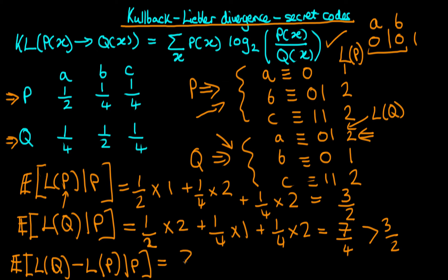Now we can work out the expected difference in letter length between a language encoded using q's crib sheet minus one optimised for p, given that we are transmitting in language p. We just get the difference: 7/4 minus 3/2, which equals 1/4. This tells us that if we transmit a message using a code language optimised for q but the message is written in language p, each letter's code is one quarter of a bit longer than optimal.